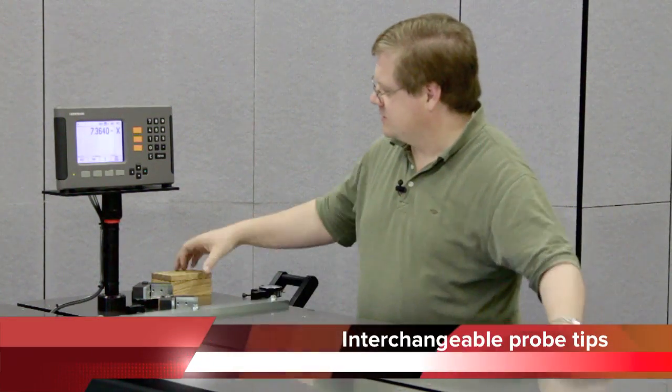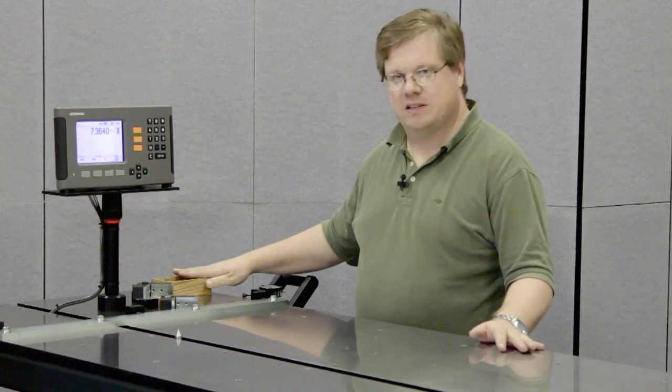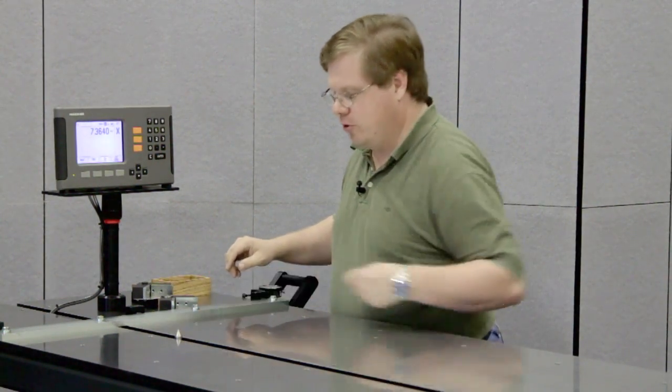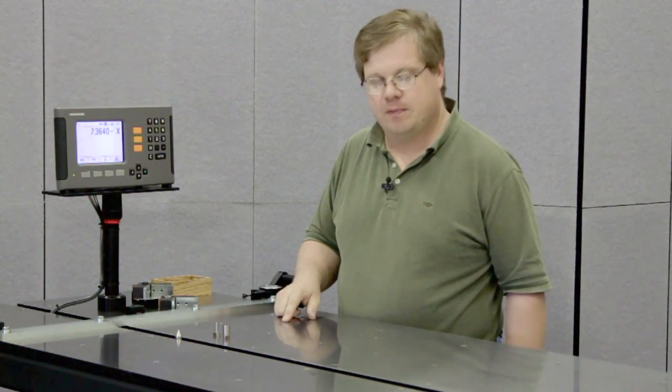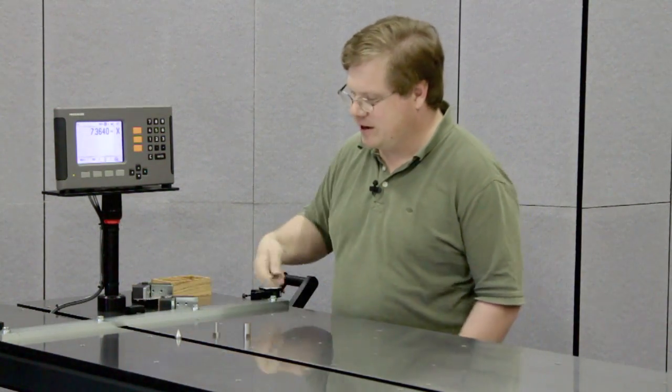Another option is our interchangeable probe tips. These usually store in a box mounted on the table. We've got the 0.600 inch diameter pointed probe, a 0.600 inch diameter straight probe, and a quarter inch straight probe. The 0.600 inch diameter straight probe works well with our diagonal block attachment.